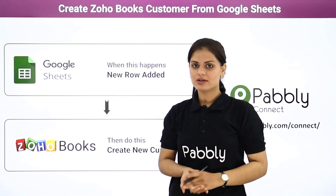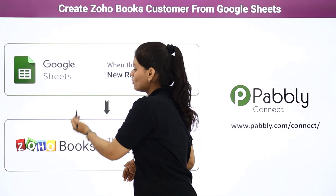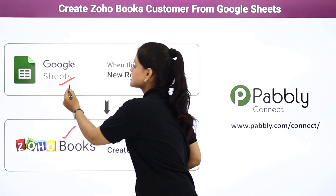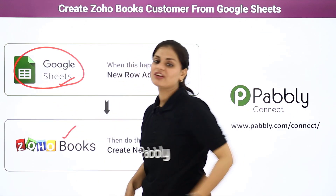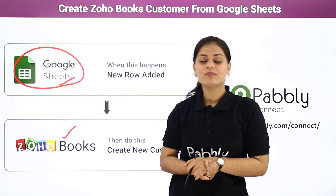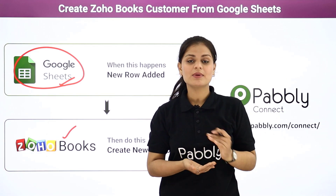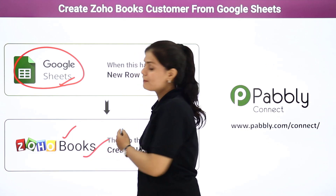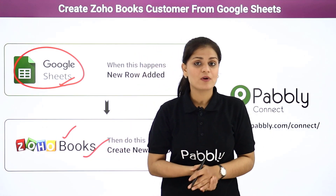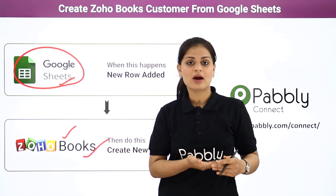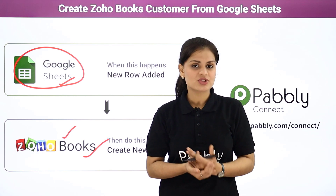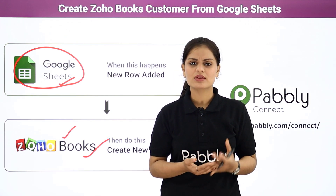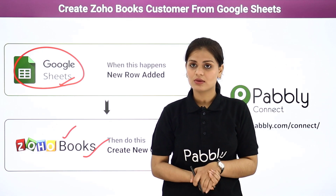Let's first understand what these two applications are all about. Google Sheets is an online spreadsheet program where you can create databases in the form of a spreadsheet. And Zoho Books is an amazing software which can perform multiple accounting tasks, right from negotiating deals to raising sales orders and creating invoices and various other tasks.